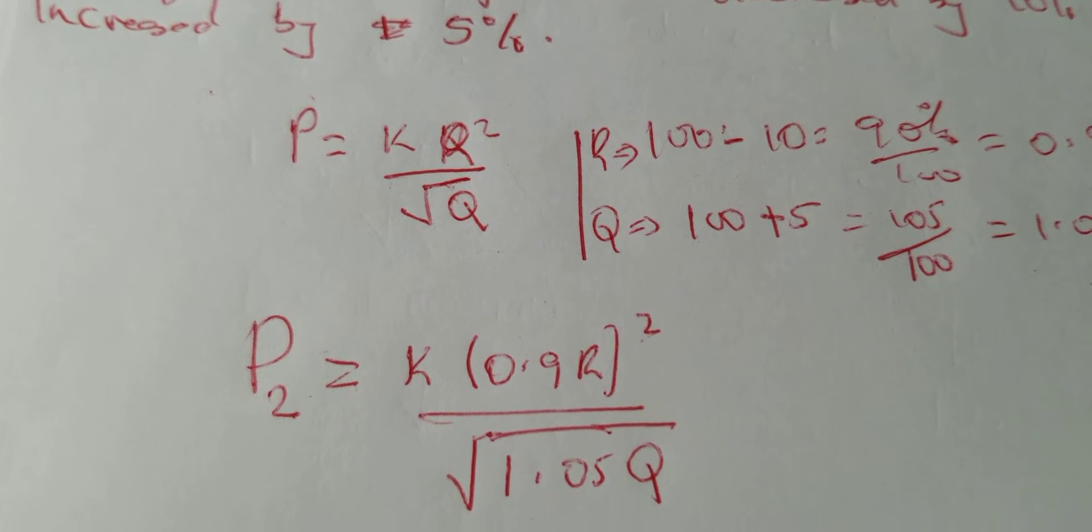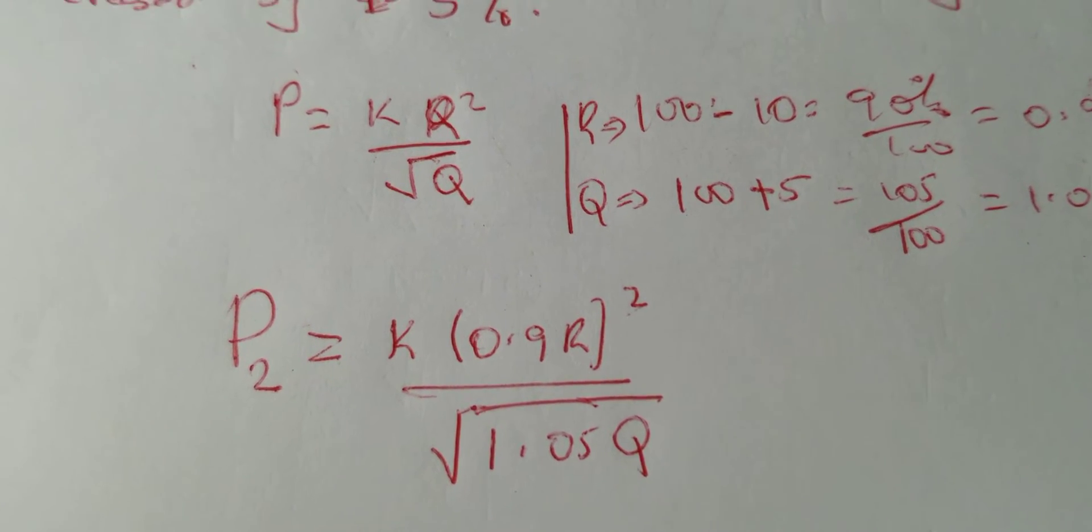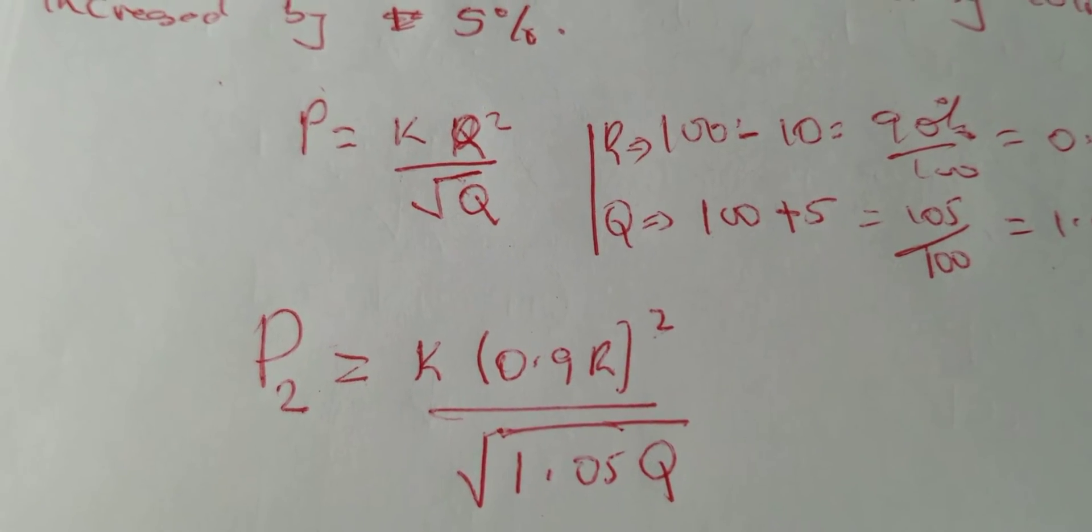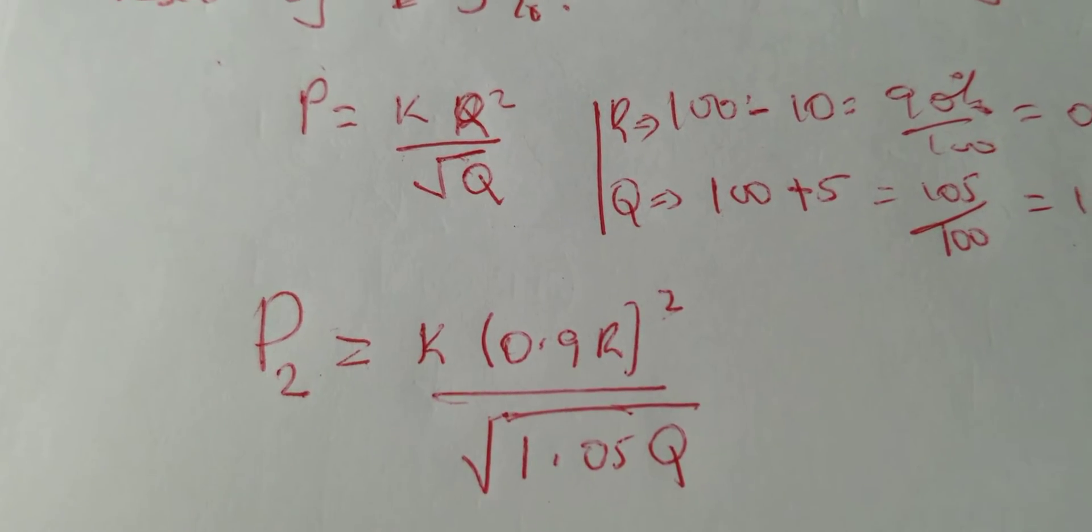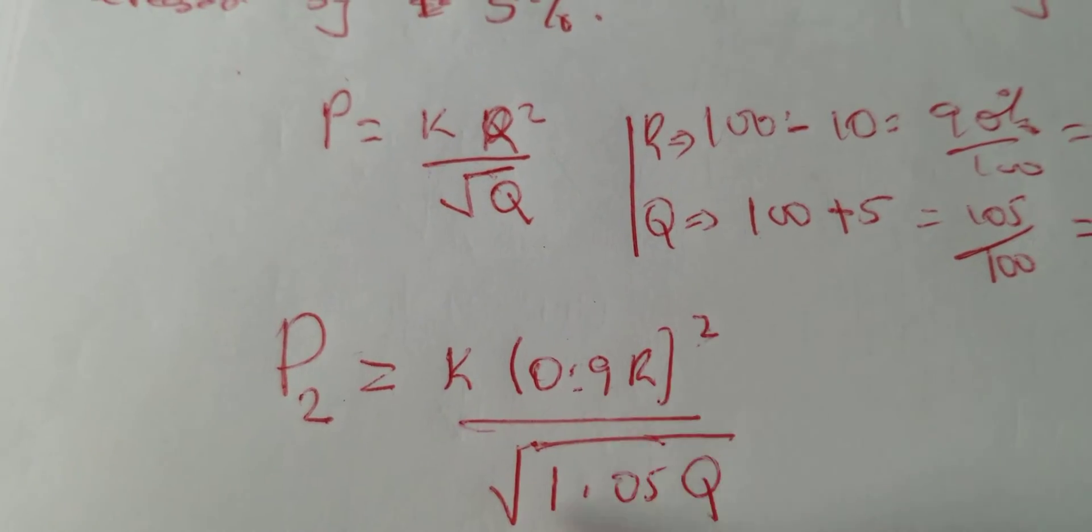So to continue, what you just need is to factor out the numbers. You don't have to continue with the variables R, P, Q, and even K. So just continue with the numbers: 0.9 squared